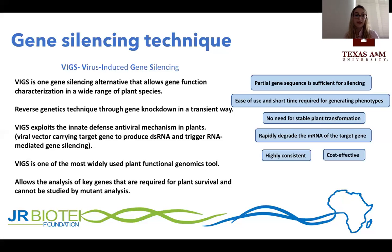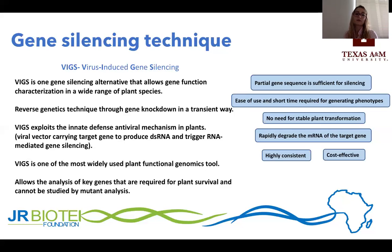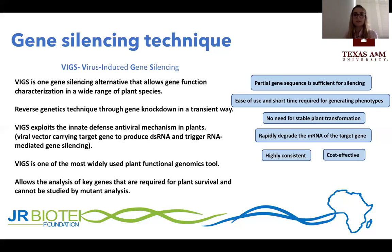VIGS also allows the analysis of key genes that are required for plant survival and thus cannot be studied by mutant analysis, as they are important for the survival of the plants. Through gene silencing, you can silence the gene and observe how these genes are important for plant function.